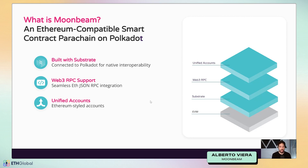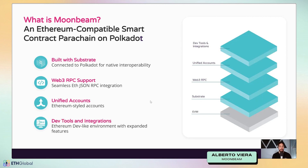Next is unified accounts. Substrate-based blockchains normally offer an SR25519 account system, which is different from Ethereum-style accounts. What we've done is modify our Substrate chain to use the Ethereum account system and signature algorithm. The main benefit is that users who want to interact with Moonbeam's EVM can do so from their account because our parachain uses Ethereum-style accounts, compared to other parachains.